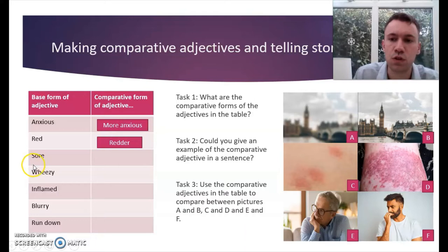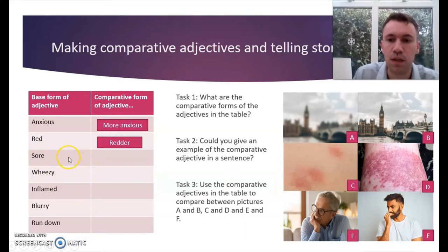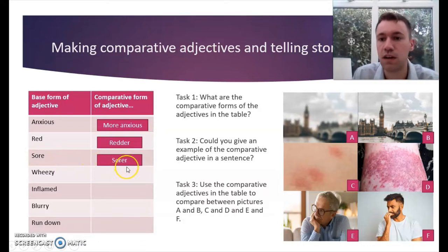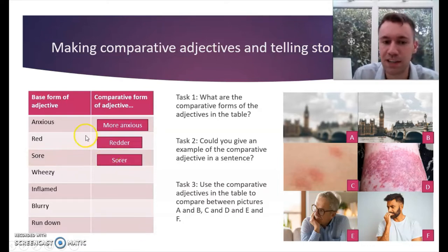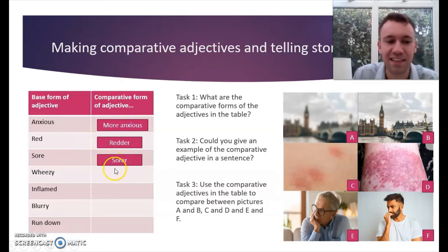The next one: 'sore.' How many syllables is it? Just one syllable, therefore: 'sorer' for the comparative. All one-syllable adjectives form the comparative using ER.